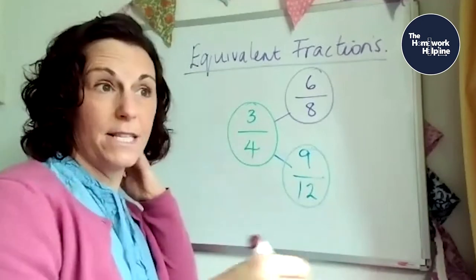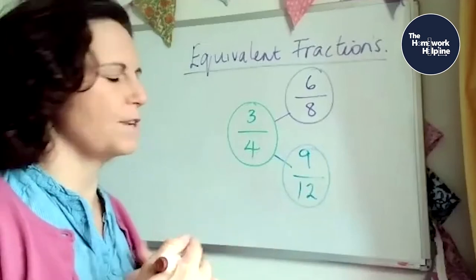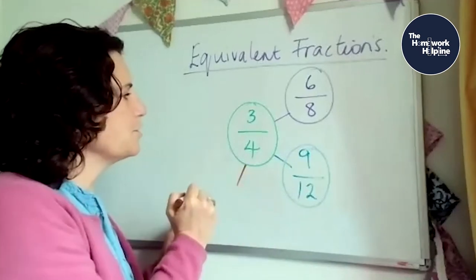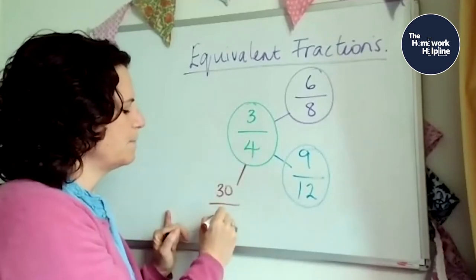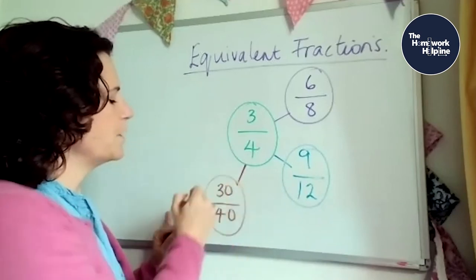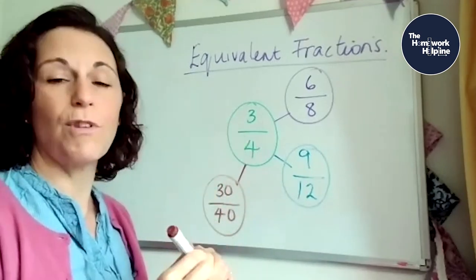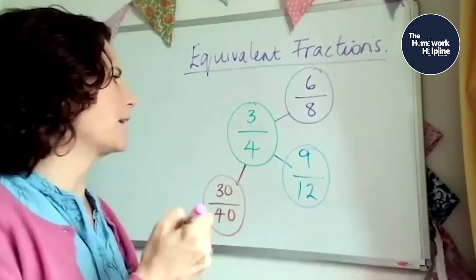Well, you can go a little bit, it can go up one, two, three, four times it by two, three, four, five, six. Or you could go straight to 10. 10 times three is 30. Four times 10 is 40. So 30 fortieths is the same or equivalent to three quarters. You see, we can keep going with this.